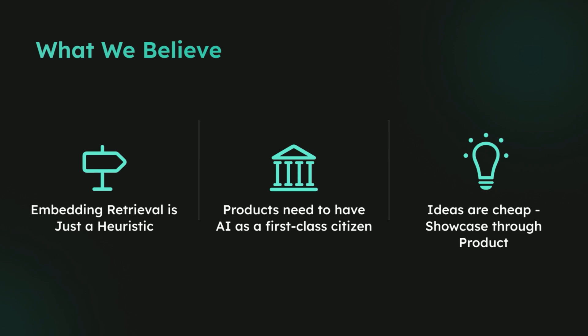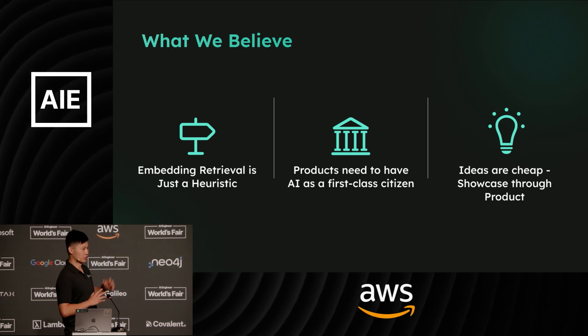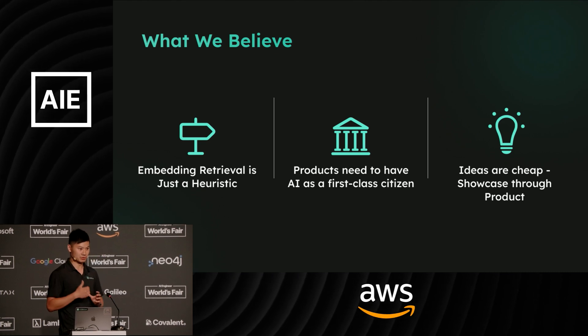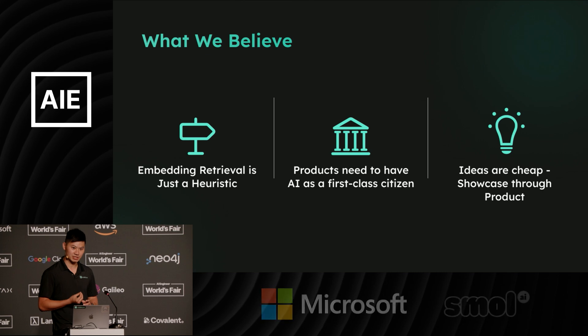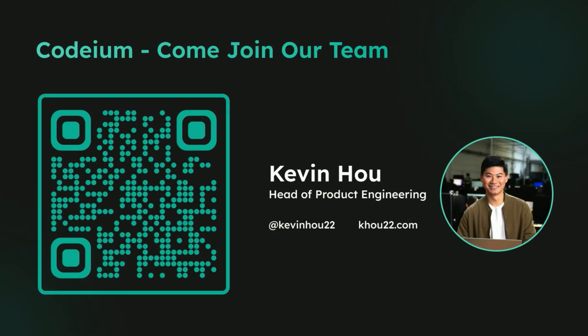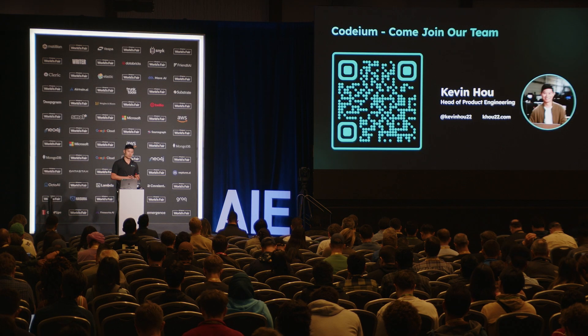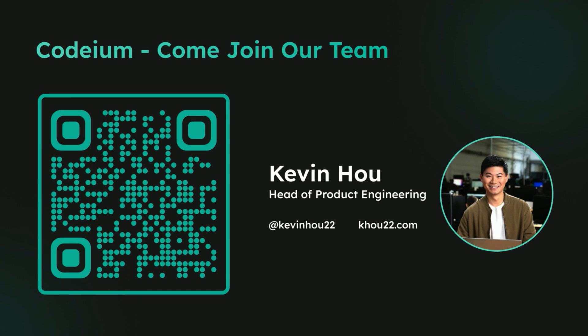We also believe that ideas are cheap. I could sit up here and tell you all these different ideas about how we're going to transform coding — all the theory behind possible solutions. But what we believe at Codium is that actually shipping, actually showcasing this technology through a product, is the best way to go. If you agree with these beliefs, you can come join our team — we're based in San Francisco. You can download our extension, it's free. You can experience this technology firsthand today. It's available on VS Code, JetBrains, Vim, and Emacs. You can see how this infrastructure and product development approach has shaped the experience for you as a user. You can also reach out to me on Twitter. I hope you learned something today — try Codium out and see what the magic can do for yourself. Thank you.